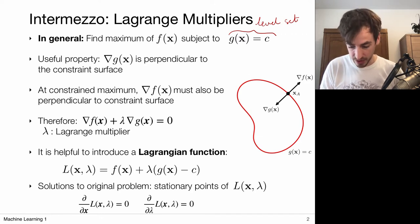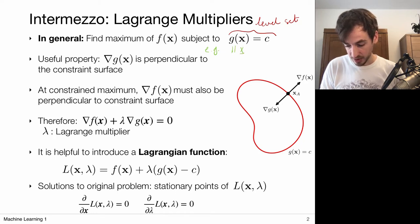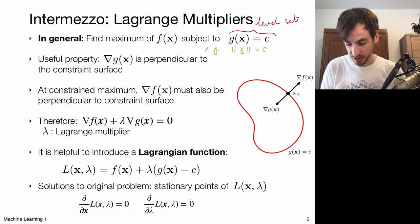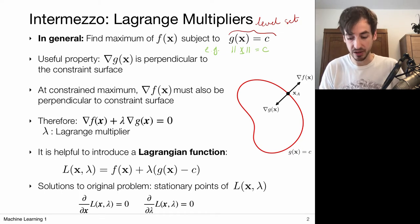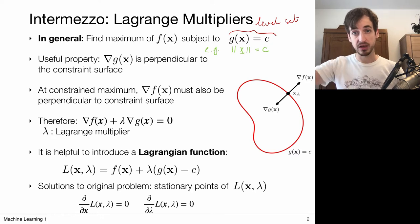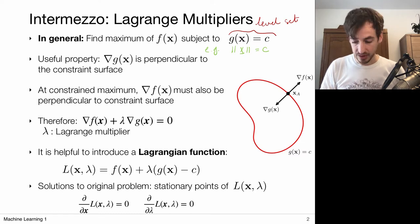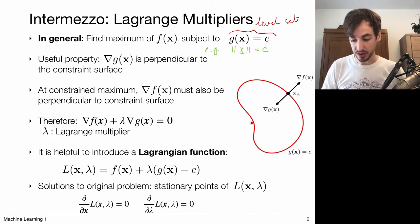To make this concrete: g(x) could be a function that takes the length of the vector x, and we want this to equal some number. So we're looking for points x which have a particular length — that's the constraint. This g(x) outputs the length for each possible x, and setting it equal to c creates a level set of points that all have the same length.